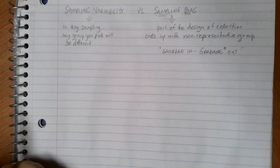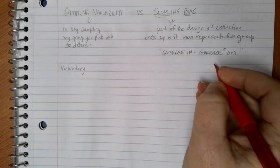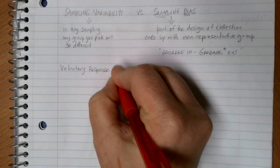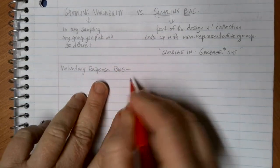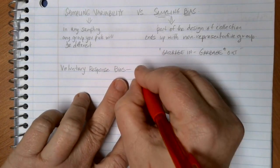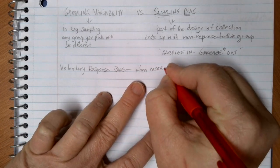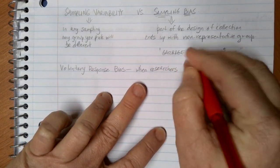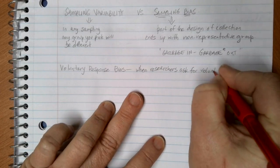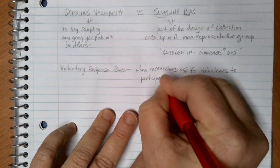Sampling bias is this big category of having some sort of an issue with the way that something is designed, that makes it so your sample isn't representative. There are a few different types of common mistakes that people make when collecting data, so we're going to identify some specific types of sampling bias and think of examples. One of the biggest types of bias we can introduce is something called voluntary response bias, which usually happens when researchers ask for volunteers to participate.